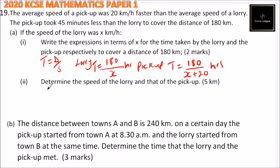It means that if we take 180 divided by x minus 180 divided by x plus 20, then it should be 3 quarters of an hour.